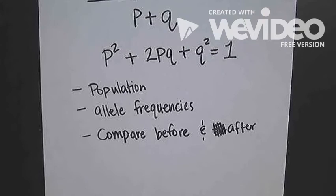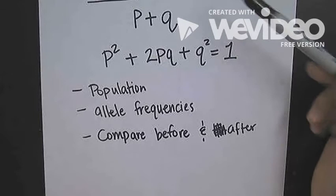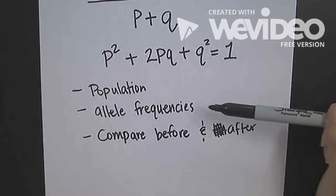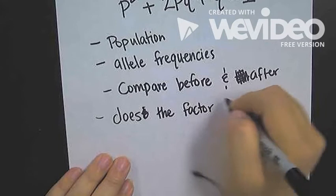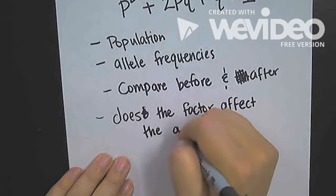When we're doing Hardy-Weinberg, when we want to see whether or not a population is in Hardy-Weinberg equilibrium, we're looking at those frequencies. We're asking ourselves, does the event or what we call the factor affect the allele frequencies?